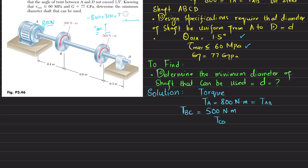For T_CD, cutting the shaft at segment CD shows there is no net torque, so T_CD = 0. Alternatively, taking from the other direction: 300 + 500 = 800 counterclockwise, which cancels the 800 clockwise, confirming T_CD = 0.